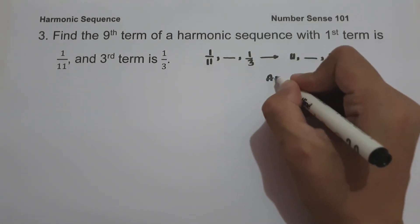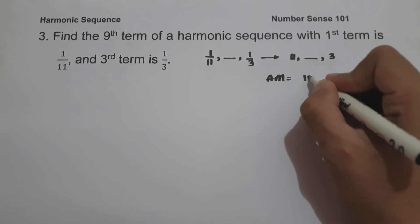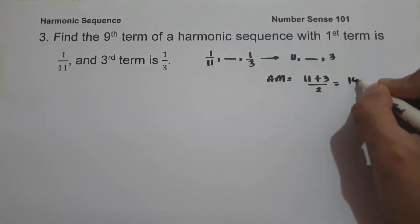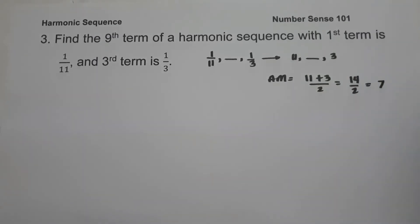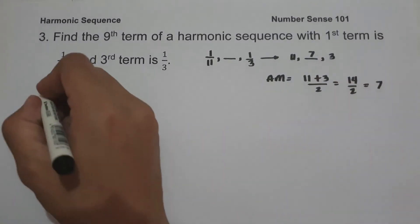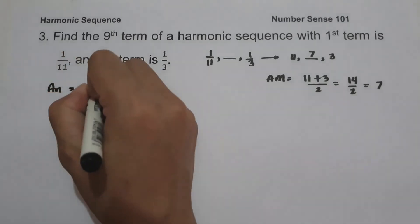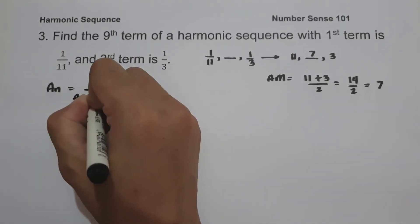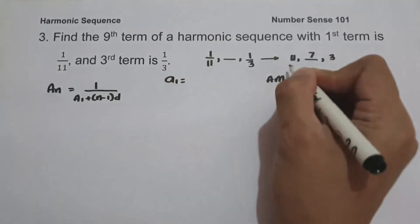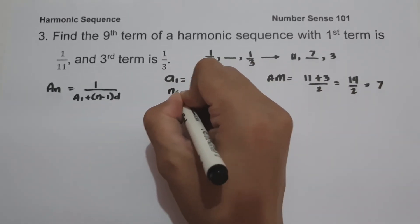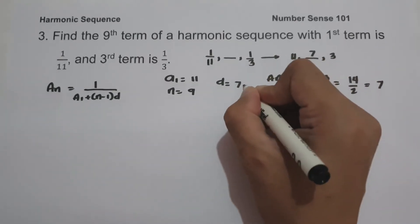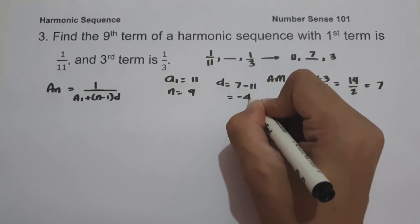The arithmetic mean of 11 and 3 is (11 plus 3) divided by 2 equals 14/2 equals 7. So 7 is our second term in the arithmetic sequence. Using the formula, a sub 1 equals 11, n equals 9, and the common difference is negative 4 (since 7 minus 11 equals negative 4).